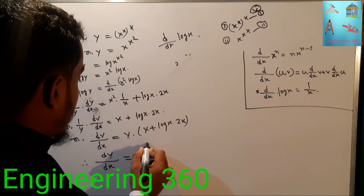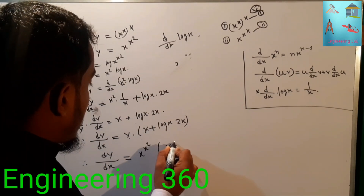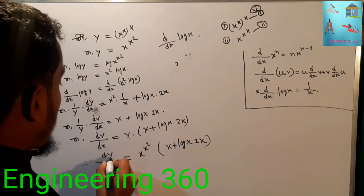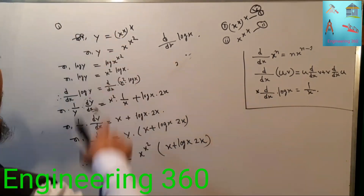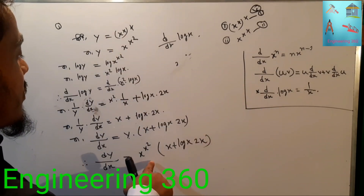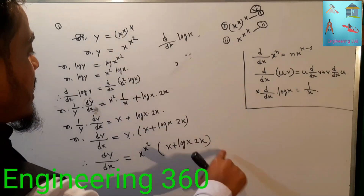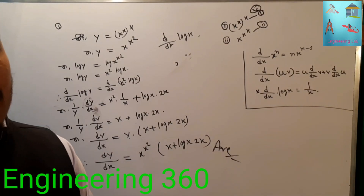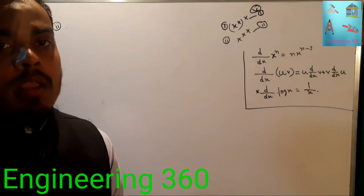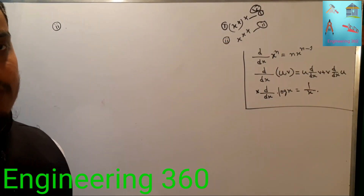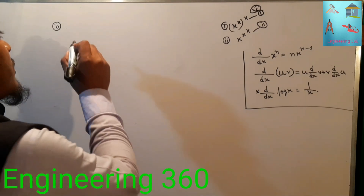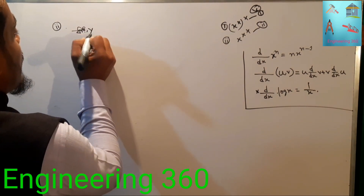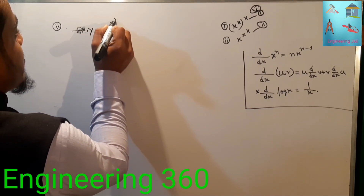So dy/dx equals y times (x plus log x times 2x), where y equals x to the power x squared. That is the answer to the first part. Now let us solve the second problem: y equals x to the power x to the power x.